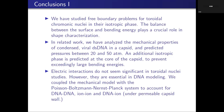A finite element simulation shows the disordered core (the dissolved blue part) and the organized packing around it. In conclusion: we have studied free boundary problems for toroidal chromonic nuclei in their isotropic phase, and the balance between surface and bending energies plays a crucial role in shape characterization. In related work, we analyzed the mechanical properties of condensed DNA in the capsid and predicted pressures between 20 and 50 atmospheres inside — a huge pressure for nanometer-scale objects (comparable to five times an open bottle of champagne). An additional isotropic phase is predicted at the core of the capsid to prevent exceedingly large bending energies.